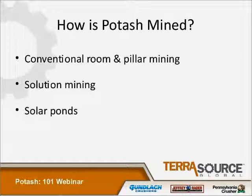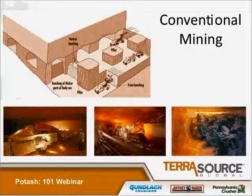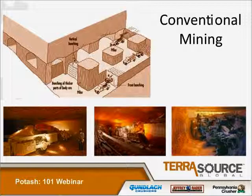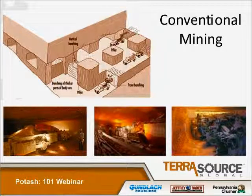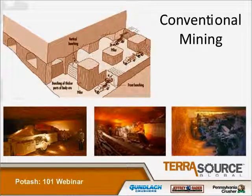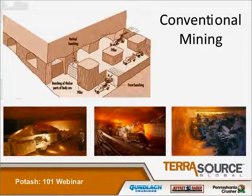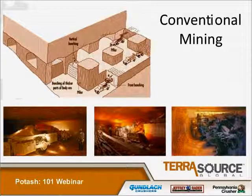How is potash mined? Conventional room and pillar, solution mining, and solar ponds. Conventional mining is called room and pillar — the material is mucked out of certain areas of the mine, keeping the pillars in place to support the back, which is the top of the mine. The material is brought over to the shaft and brought out to the surface for further processing.